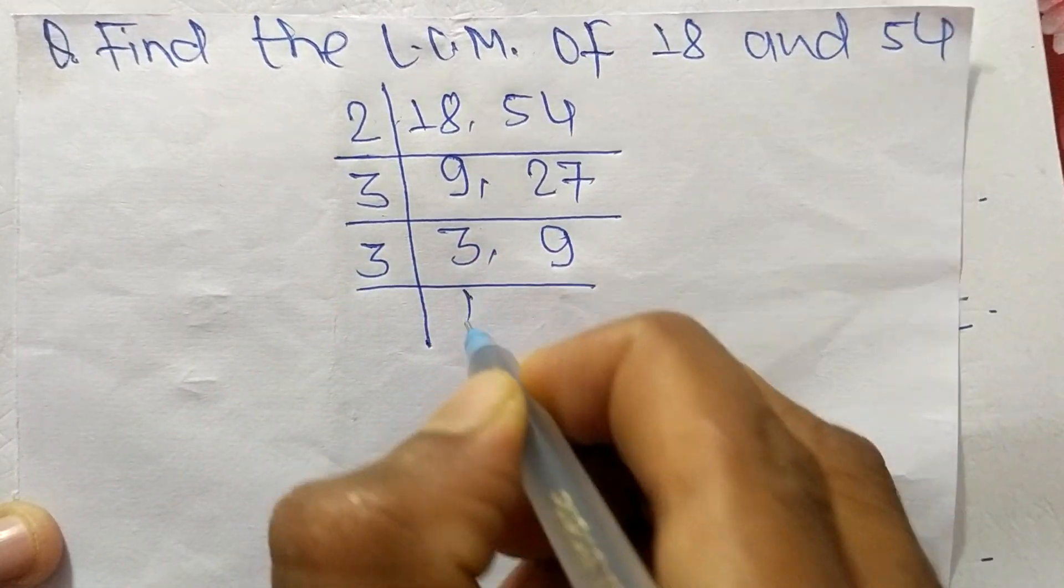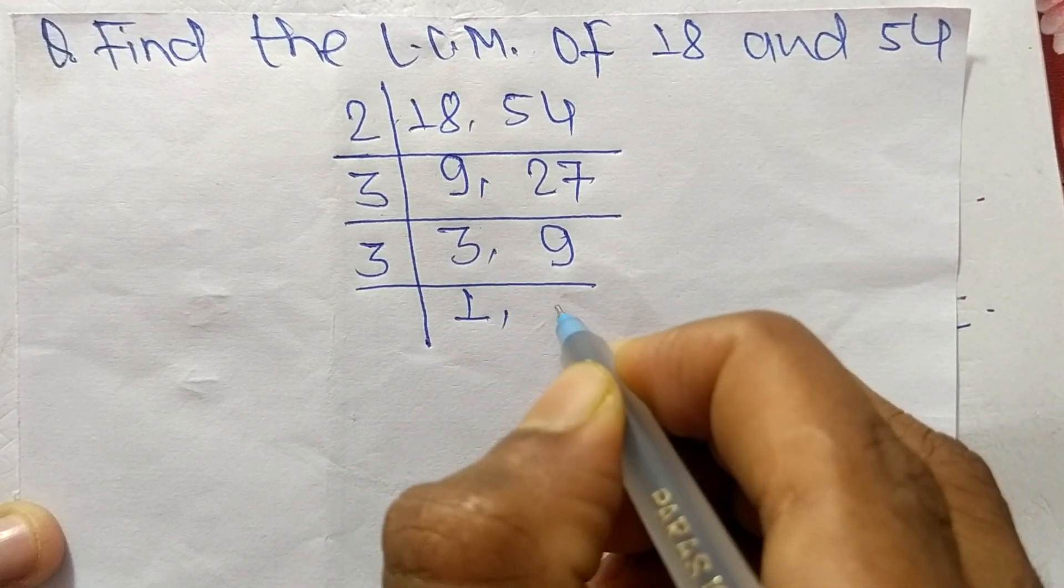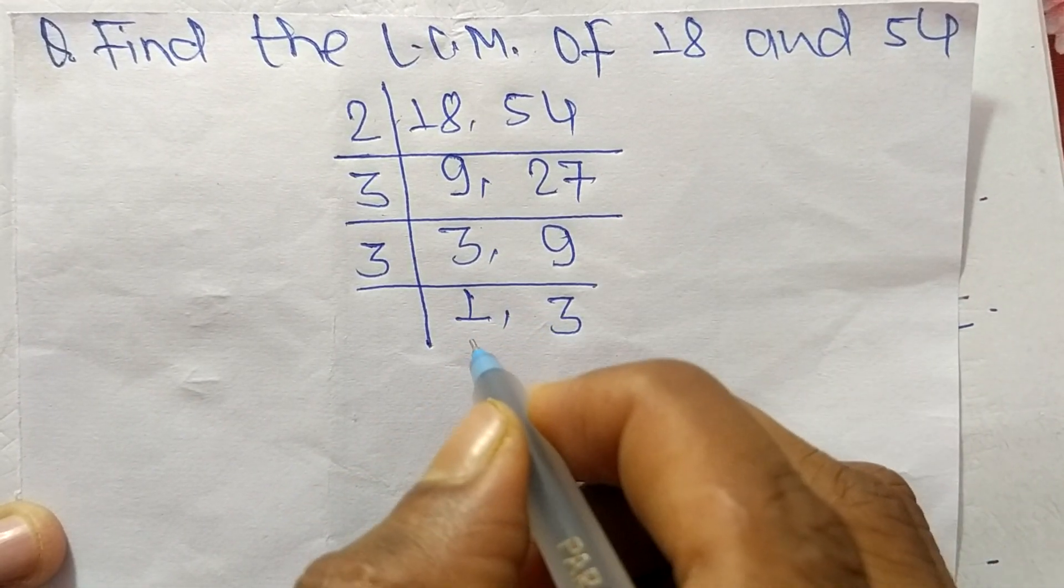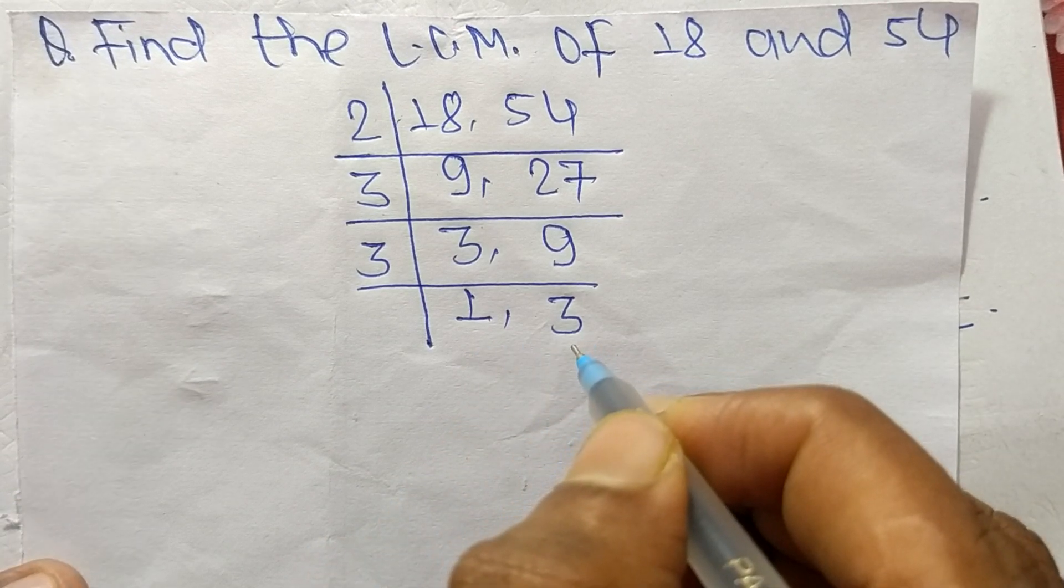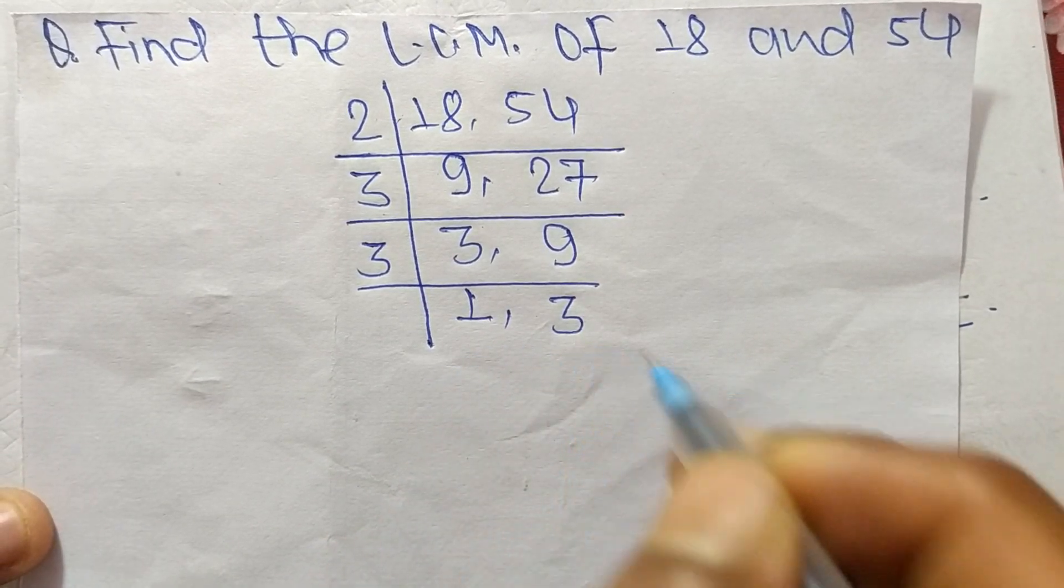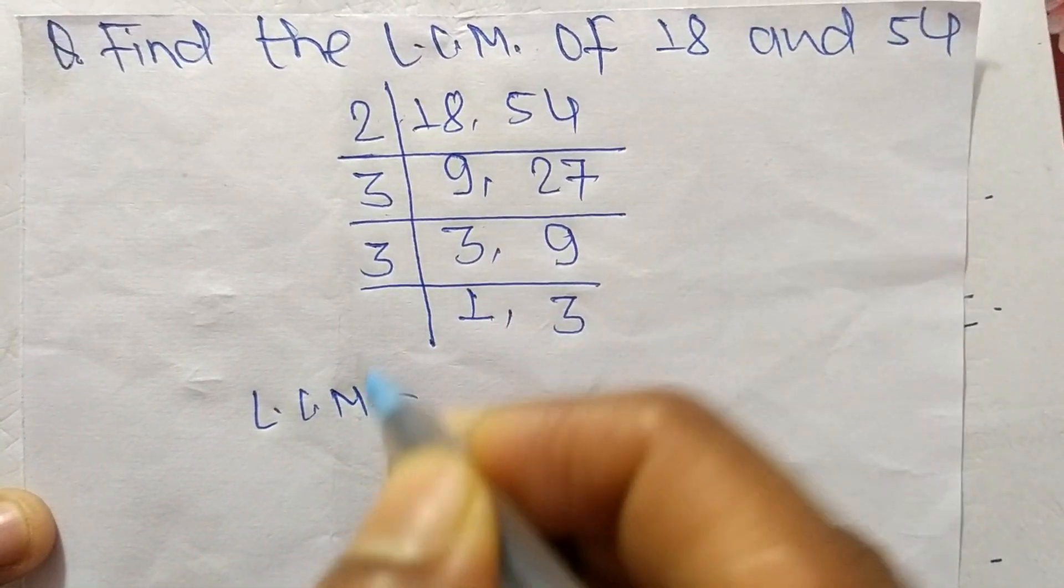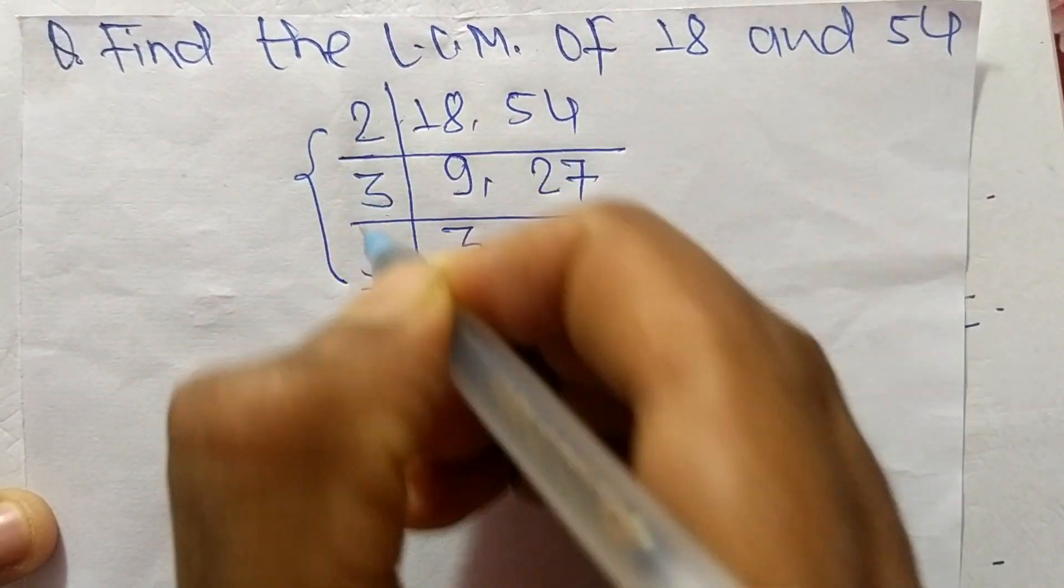So 3 times 1 means 3, 3 times 3 means 9. So we have here 1 and 3 which are not exactly divisible by the same number. So the LCM is equal to from this part 2 times 3 times 3.